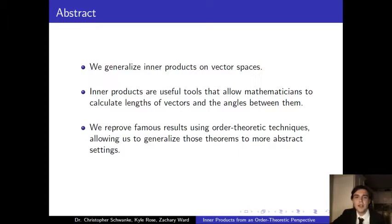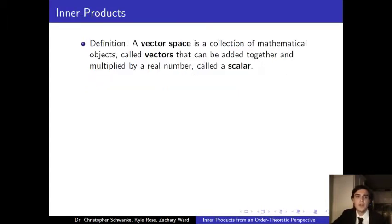Now, before we get to that last point, we need to define several things. First, let's start with defining what a vector space is. A vector space is simply what it sounds like, a space or a collection of vectors. And in this space, vectors can be added together and multiplied by a real number, called a scalar.